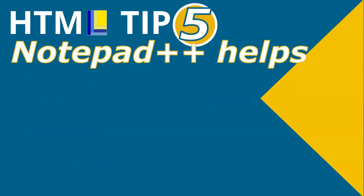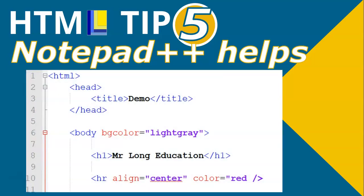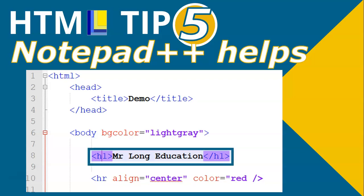HTML tip number five: if you're using Notepad++, use it to help you. For example, if you click on an H1 tag in line eight, you'll notice it goes purple — that tells you the tag closes there, which you can see very clearly. If it doesn't go purple, you've left out the closing tag. When using attributes, the attribute appears in red if spelled correctly. If it's misspelled, it will not go red, so you'll know you've made a mistake.